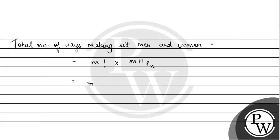This is equal to M factorial multiply by M plus 1 factorial upon M minus N plus 1 factorial.